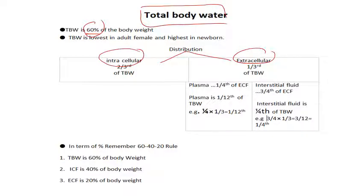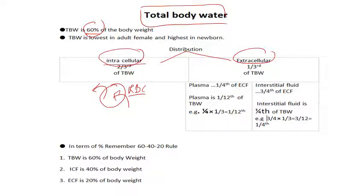When discussing the intracellular compartment, never forget that RBC is a cell. If fluid enters an RBC it will swell, and if fluid leaves it will shrink. So don't forget that in intracellular compartment questions, RBC is included — its internal environment is intracellular. The extracellular compartment is further divided into two parts: interstitial and plasma.